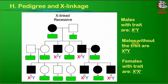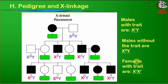Males without the trait have to have the dominant allele, so males that are unaffected are X big R, Y. Then, if there are any females with the trait, they have to be X little r, X little r, because the trait is recessive and they must have both recessive alleles. Individuals number 1, 8, and 14 are showing this recessive trait. That leaves us with four individuals — numbers 4, 6, 10, and 12 — whose genotypes we need to figure out through reasoning.